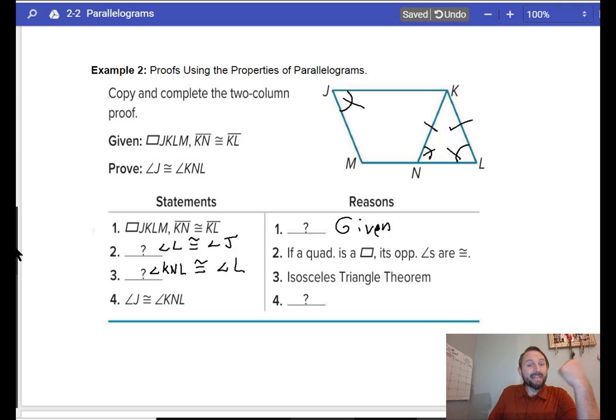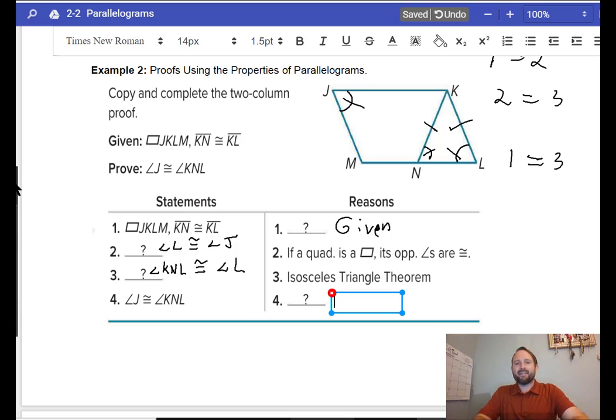Now, if we have three things that are equal to each other, like, hey, one equals two, and two equals three. Then, we can say that one is equal to three. So, angle J is congruent to angle KNL. Why? This is called the transitive property. Ooh, I hit my mic. Transitive property.